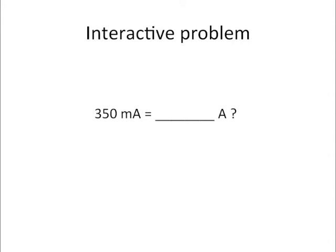So another interactive problem here, we have 350 milliamps. How many amps is that? We can do basically the reverse of what we did before with the kilovolts to volts. Because this is a smaller thing, we're going to move that decimal place over three positions to the left and that will give us 0.35 amps.